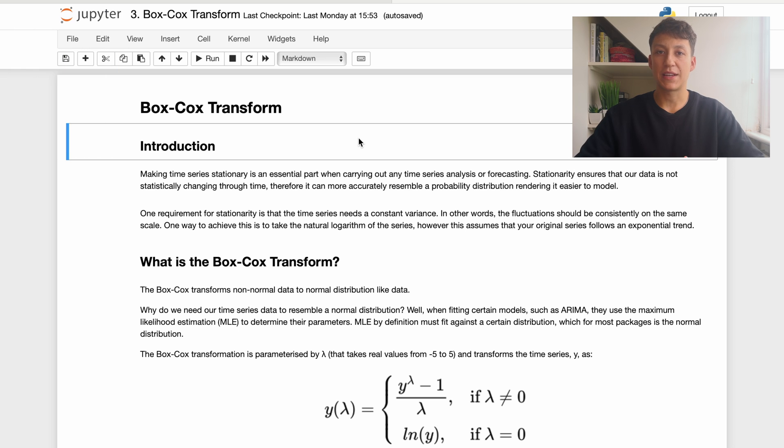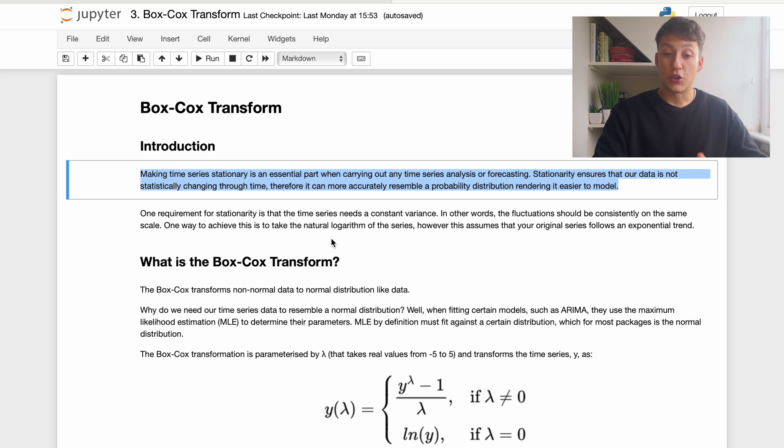In my previous video, which I'll link on the screen here, we discussed the idea of stationarity. Stationarity is a really important part of time series analysis and what it's doing, as written here, ensures our data is not statistically changing through time. This means that all the statistical properties like the mean and variance are constant; it doesn't change as our time series evolves or goes forward in time. That's important because when we're carrying out any analysis or forecasting, it makes our life a whole lot easier.